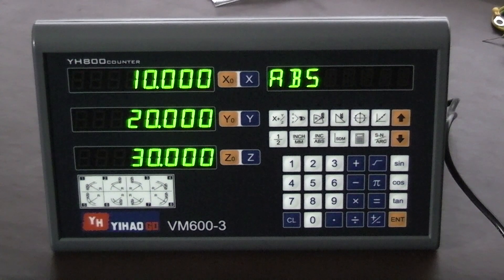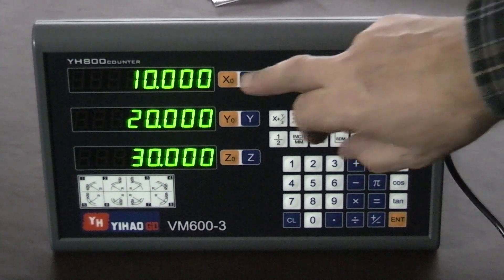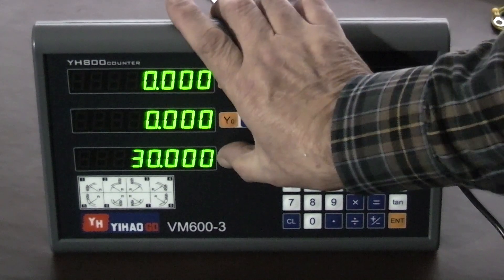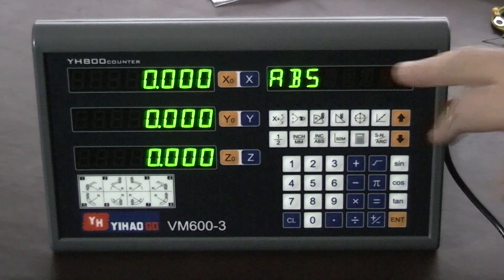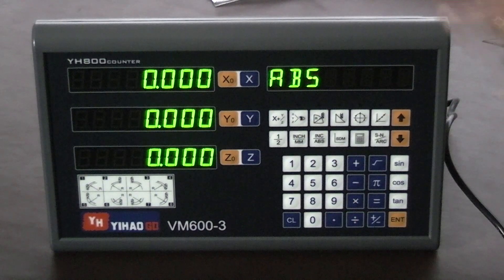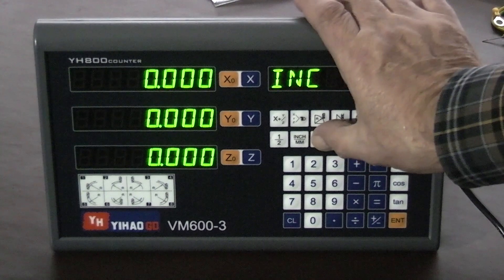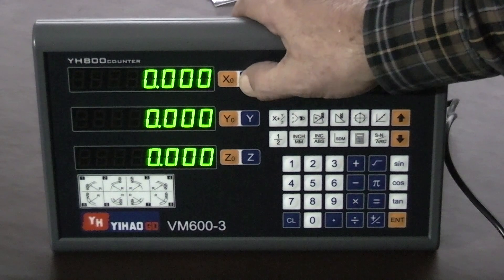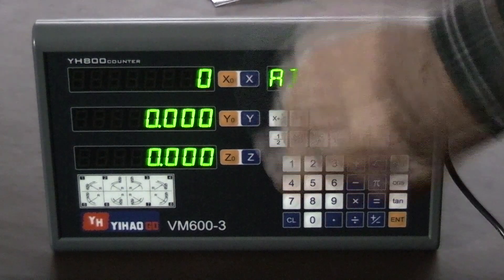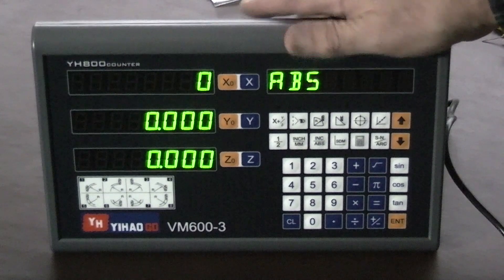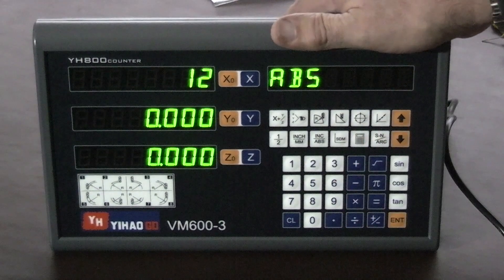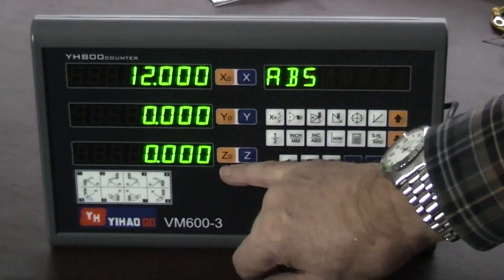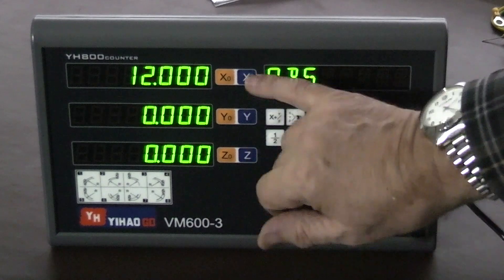So if I go through some of the features on this one, X, Y, and Z zero will zero your X, Y, and Z scale. ABS is absolute or you can change it to incremental. This X, Y, and Z in blue is to select the axis, then you can put a distance in and enter that for the axis. So the yellow ones zero it, the blue ones let you input a figure.